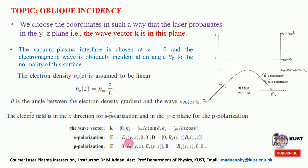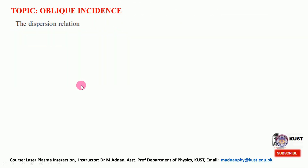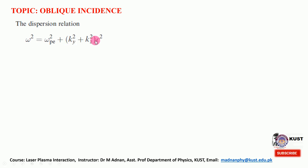In the next lecture we will take these values following the same figure. For a two-dimensional wave propagation, the dispersion relation is omega squared equals omega_p squared plus k squared c squared. Since I noted that k squared equals ky squared plus kz squared, we will use this decomposition.